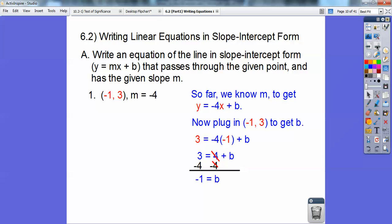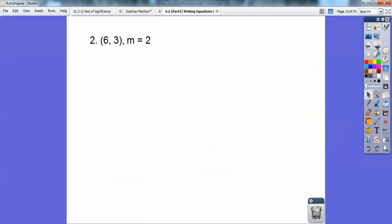Now that's not the answer. A lot of students want to stop right there. It says write the equation in slope-intercept form. So I'm going to put that b right up there into where the b goes. The answer is going to be y equals negative 4x minus 1. Let's try another one of those.